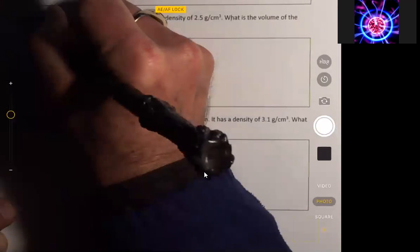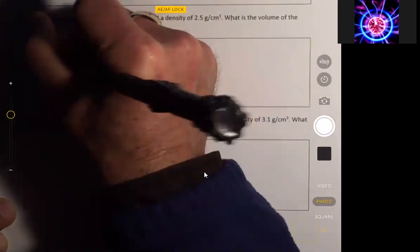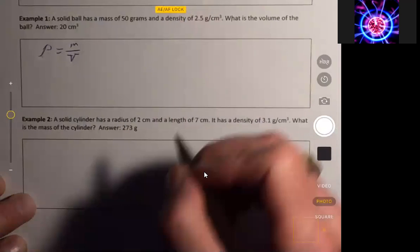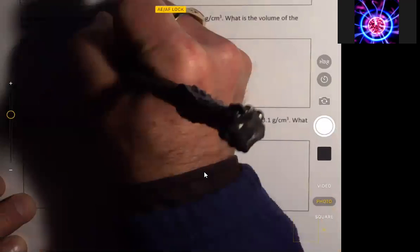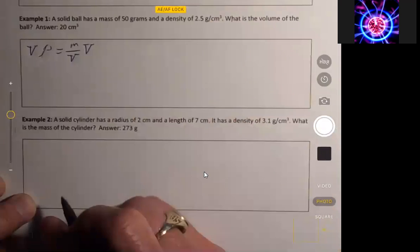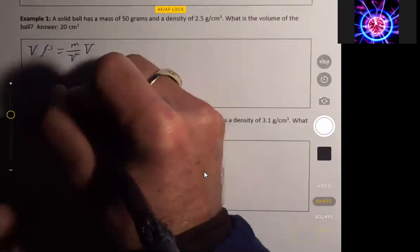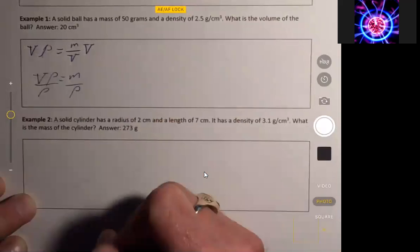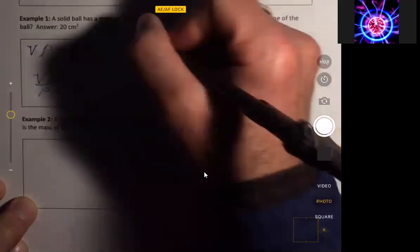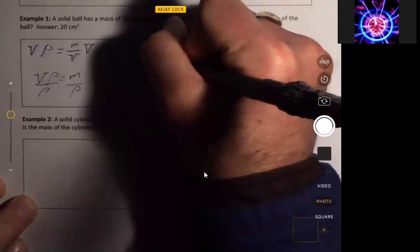So we know that density is equal to mass over volume. Then we can multiply both sides by volume, and we get density times volume equals mass. You can divide both sides by the density, and so volume equals mass over density.